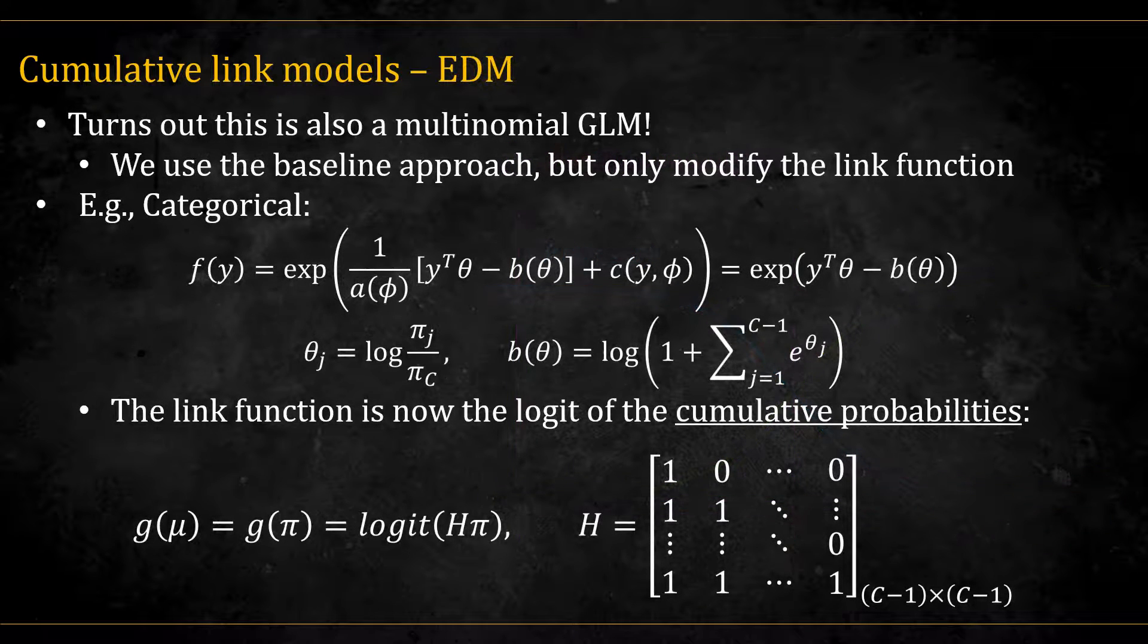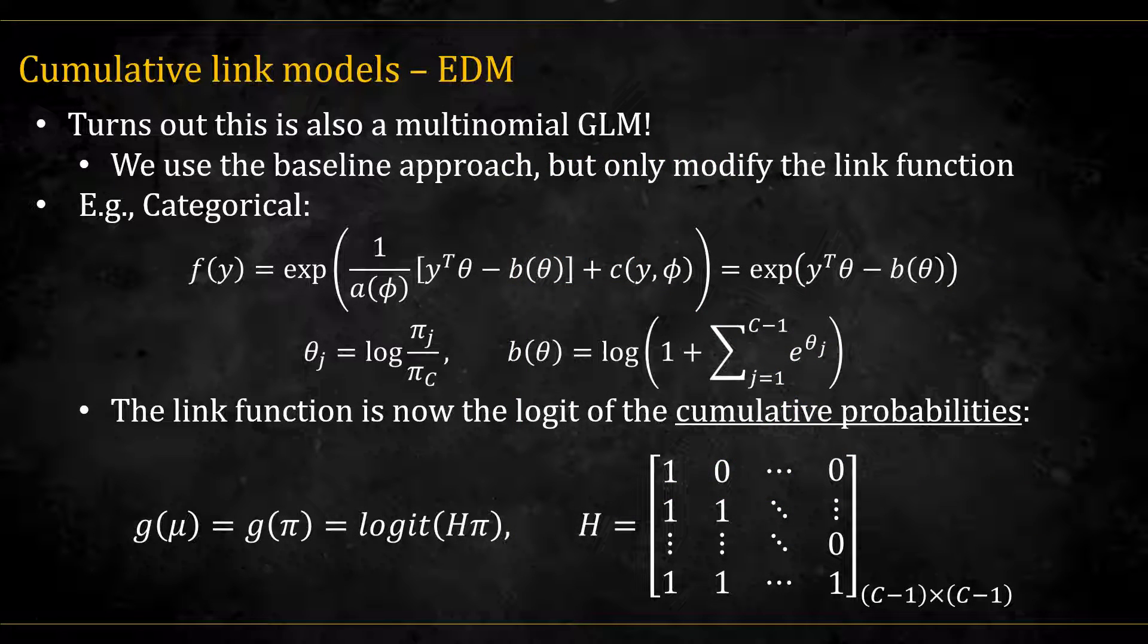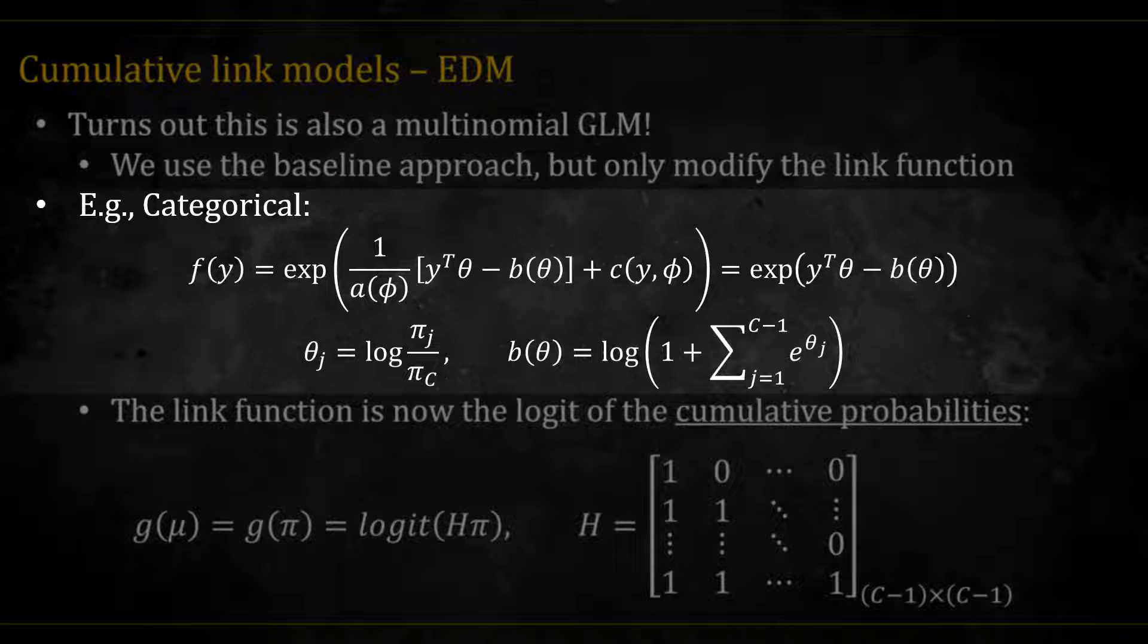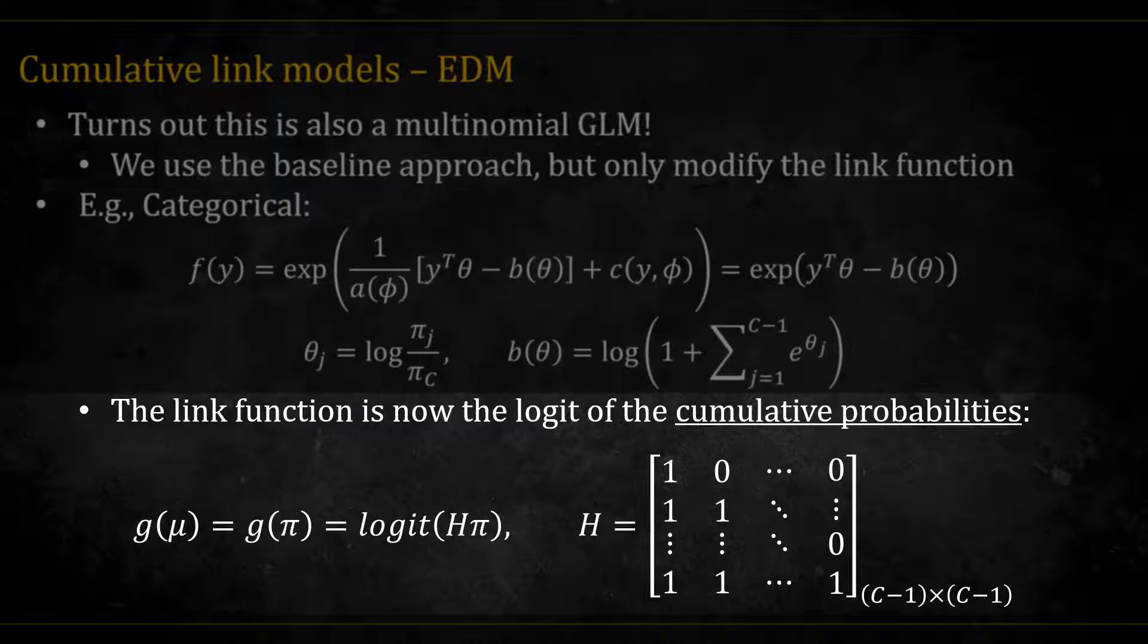Turns out, this is also a multivariate GLM and can be put in EDM form. The only thing we need to modify is the link function. For example, for categorical, here is the EDM form, where theta, the natural parameter, is the same. The link function is now the logit of the cumulative probabilities. We can get that by multiplying the vector of probabilities by the lower triangular matrix H, as shown here.